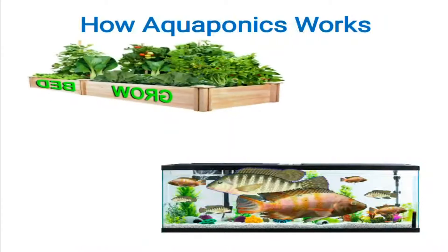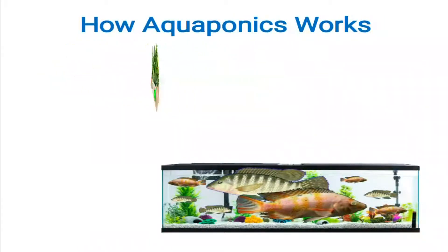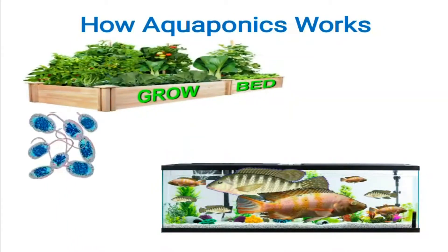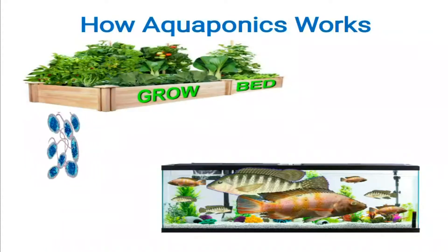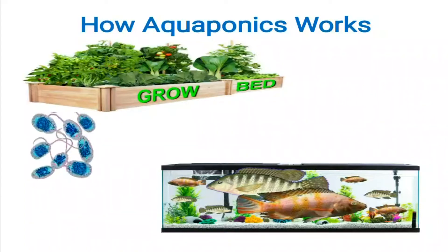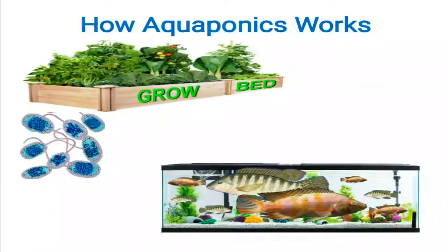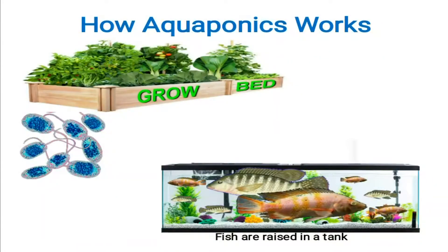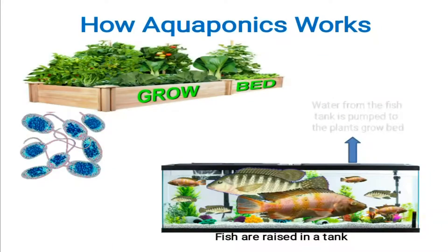Dito, may dalawa tayong mahalagang component sa ating aquaponics system. Una ay yung fish tank, at yung ikalawa ay yung tinatawag na grow bed, na doon natin itatanim ang ating mga halaman. Ang aquaponics ay ang pagtutulungan ng mga isda, halaman, at yung pangatlo ay yung bacteria.